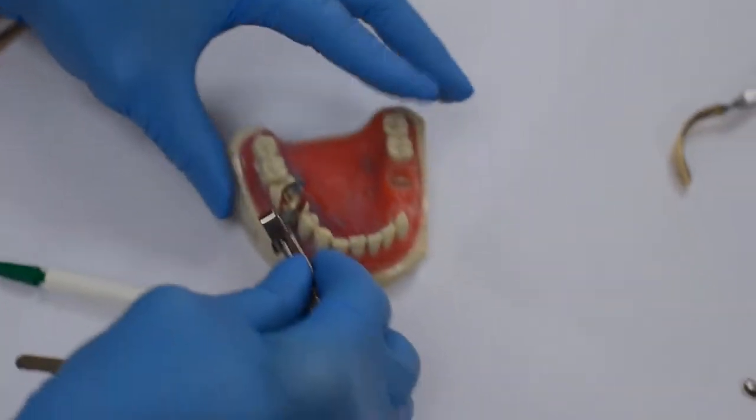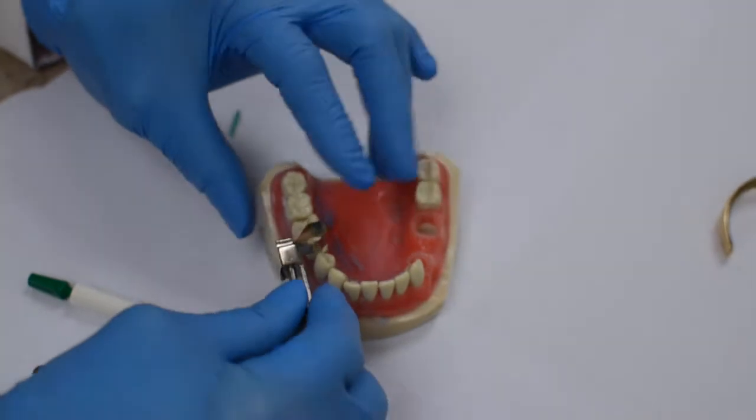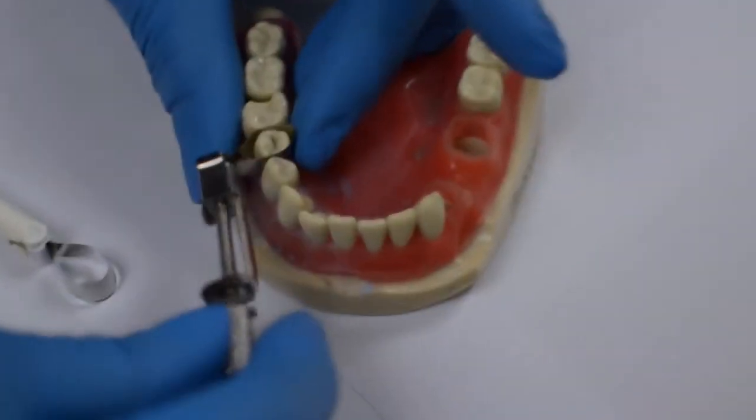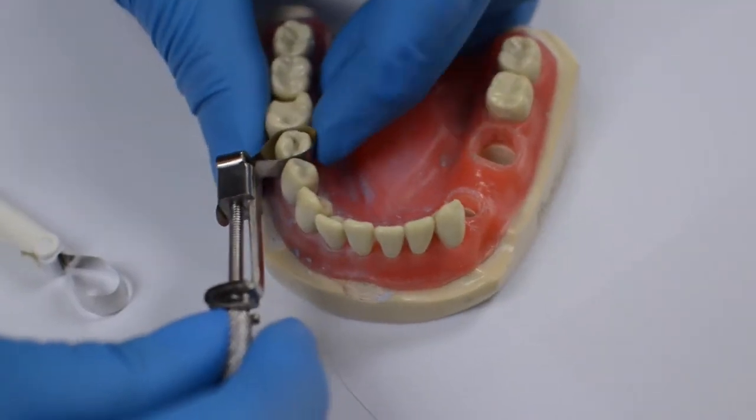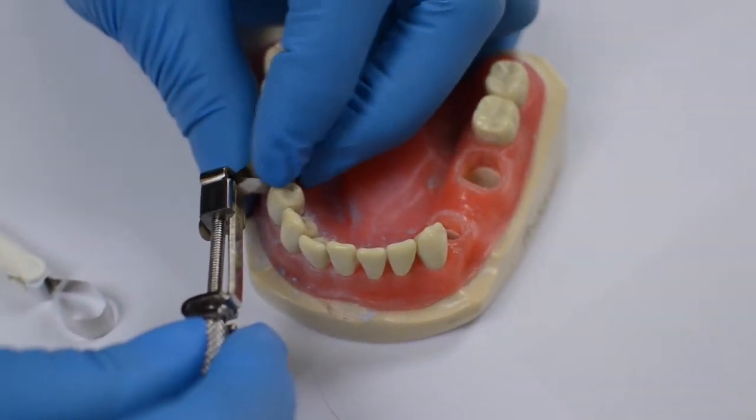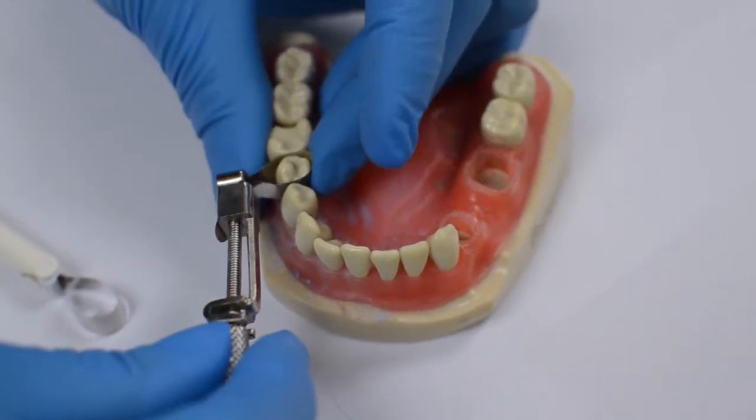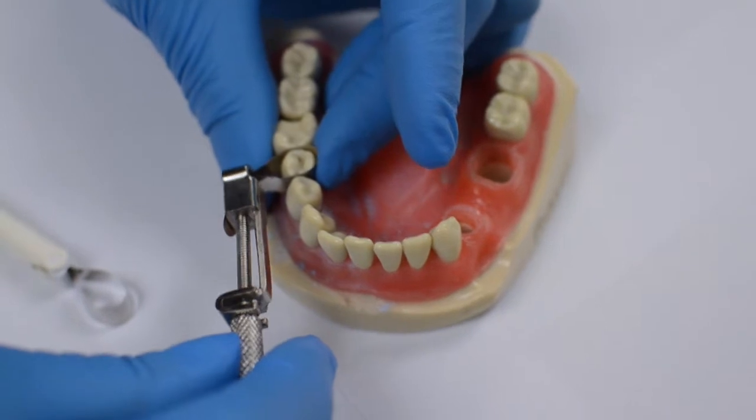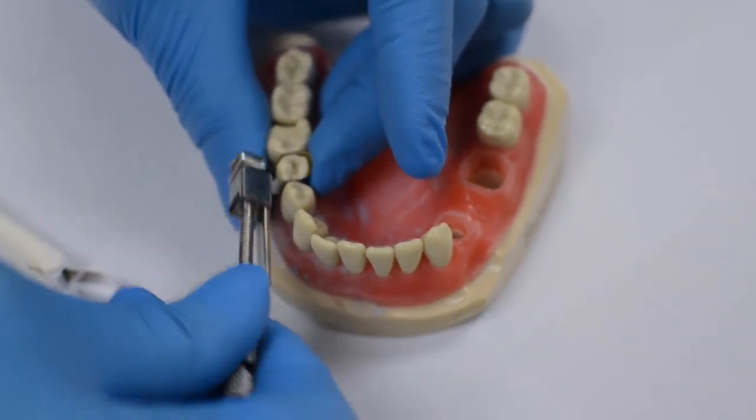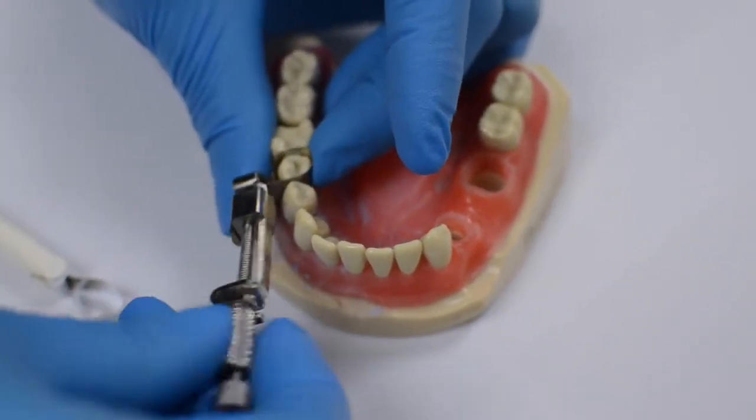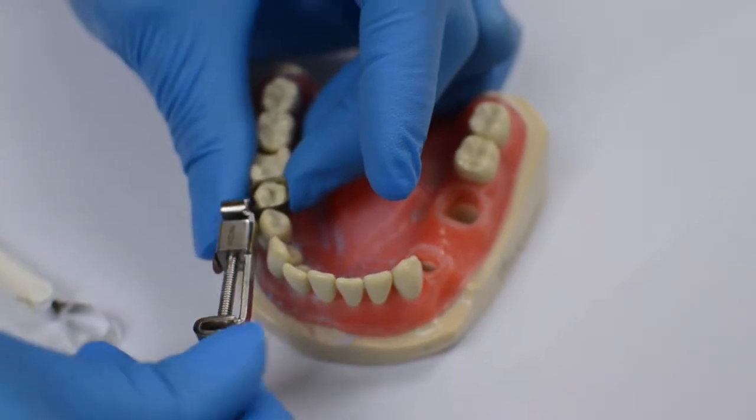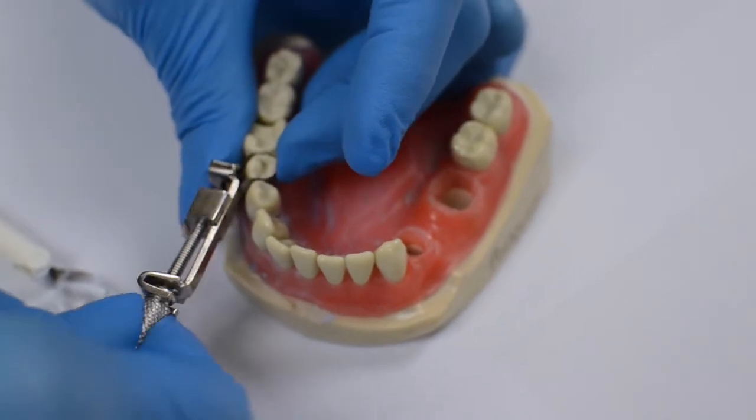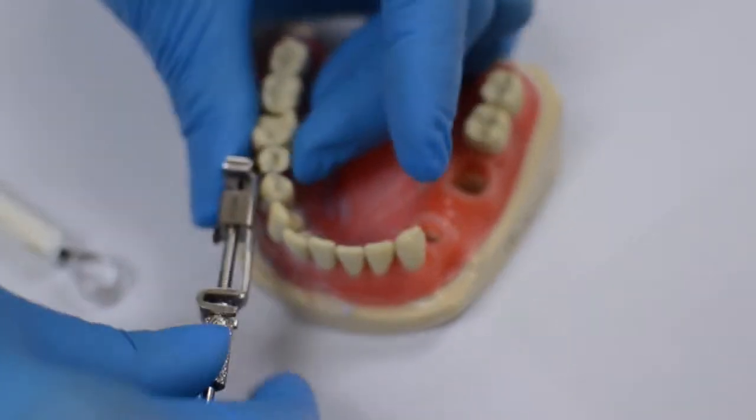Now we're going to put the band over the tooth. It slips right in, that's good. Now ideally you want the edge of the band, the occlusal most portion, to be about one or two millimeters occlusal to the height of the proposed marginal ridge that you're going to create. Then we're going to tighten the larger nut.